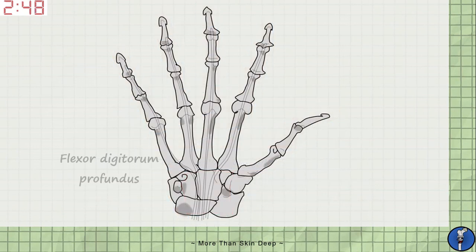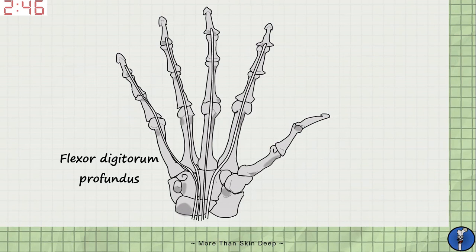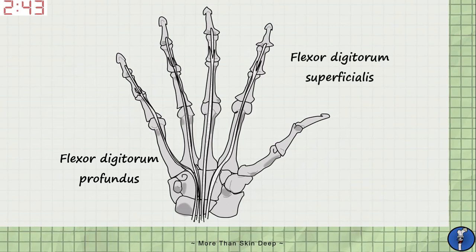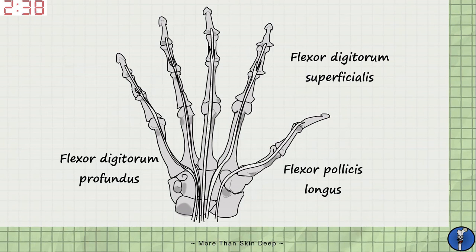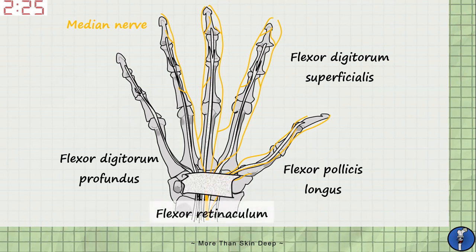The structures that pass through the carpal tunnel are the tendons of flexor digitorum profundus and flexor digitorum superficialis, which flex the fingers, and the flexor pollicis longus tendon, which passes through on the lateral side to flex the thumb. The fourth and most clinically significant structure is the median nerve, which passes through superficial to the tendons to provide motor and sensory supply to the lateral side of the hand. All of these tendons are held down to the palm and prevented from bowstringing by a fibrous band known as the flexor retinaculum, which attaches to the hook of the hamate and the pisiform on the medial side, and the tubercles of the scaphoid and trapezium on the lateral side.